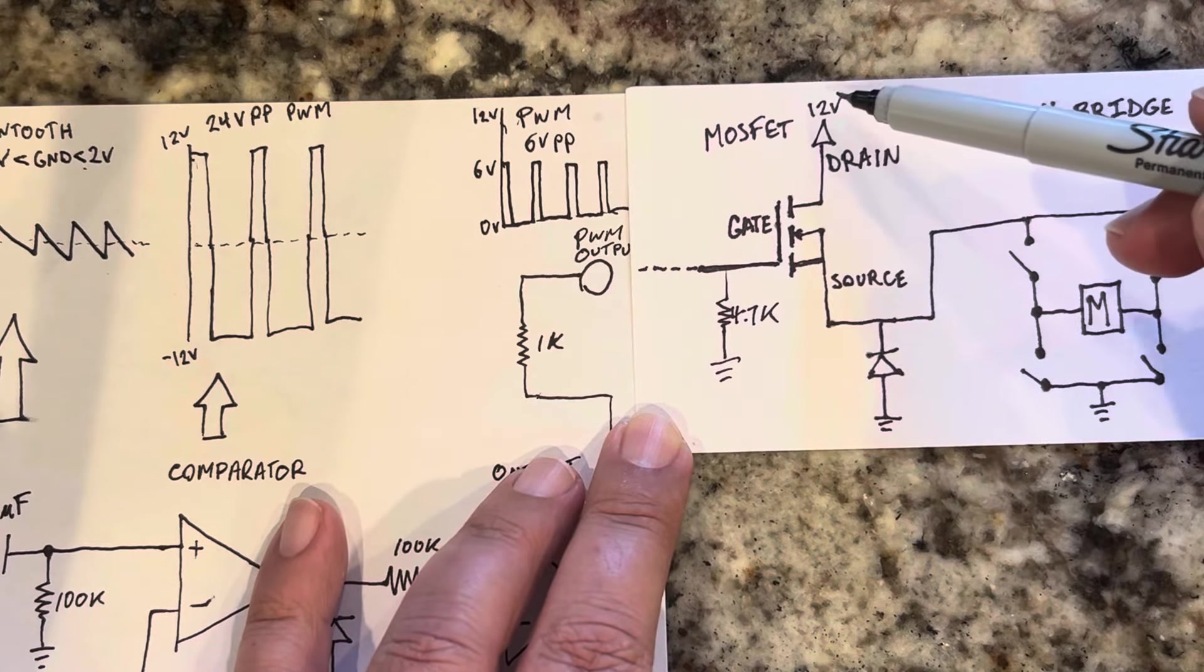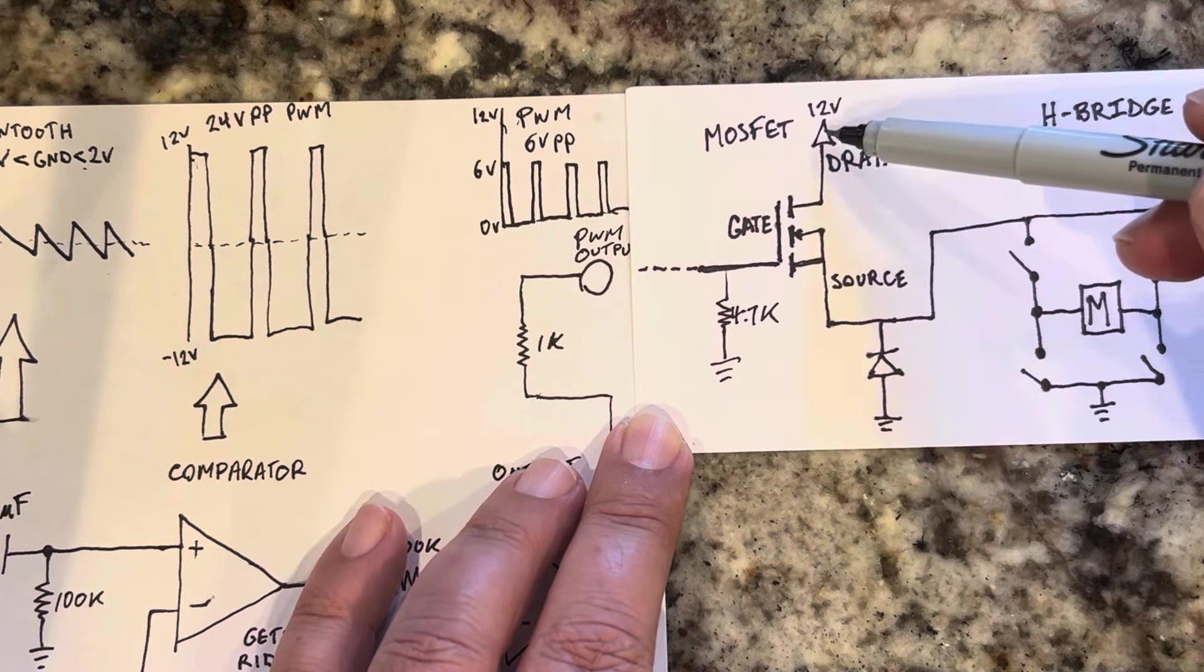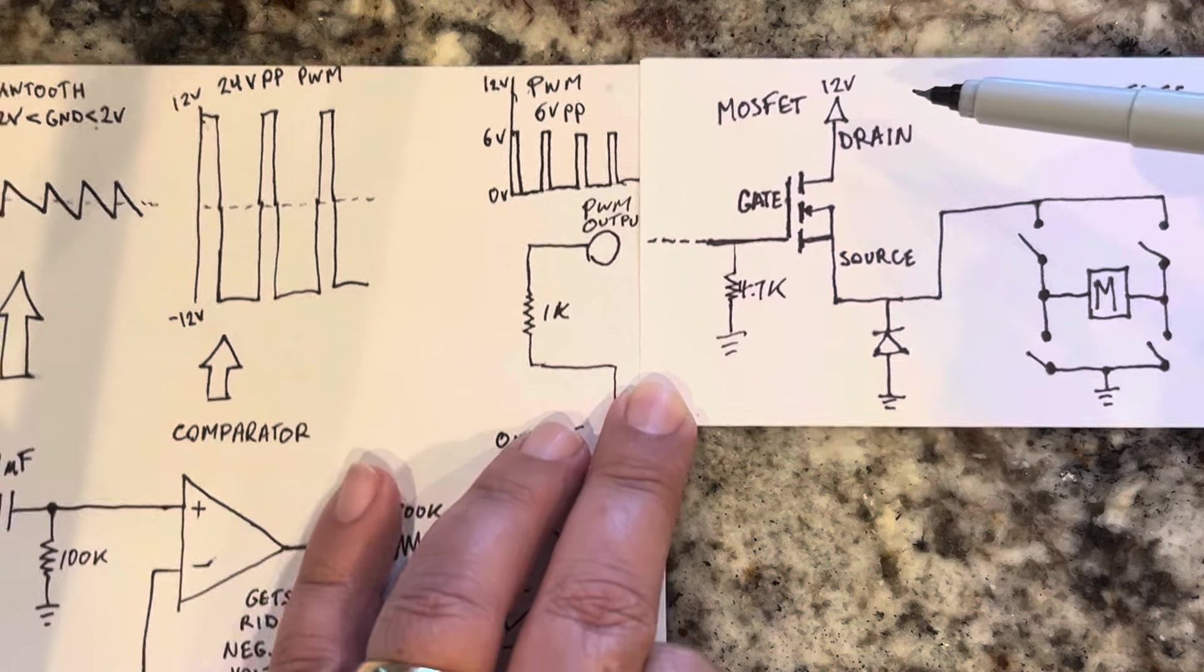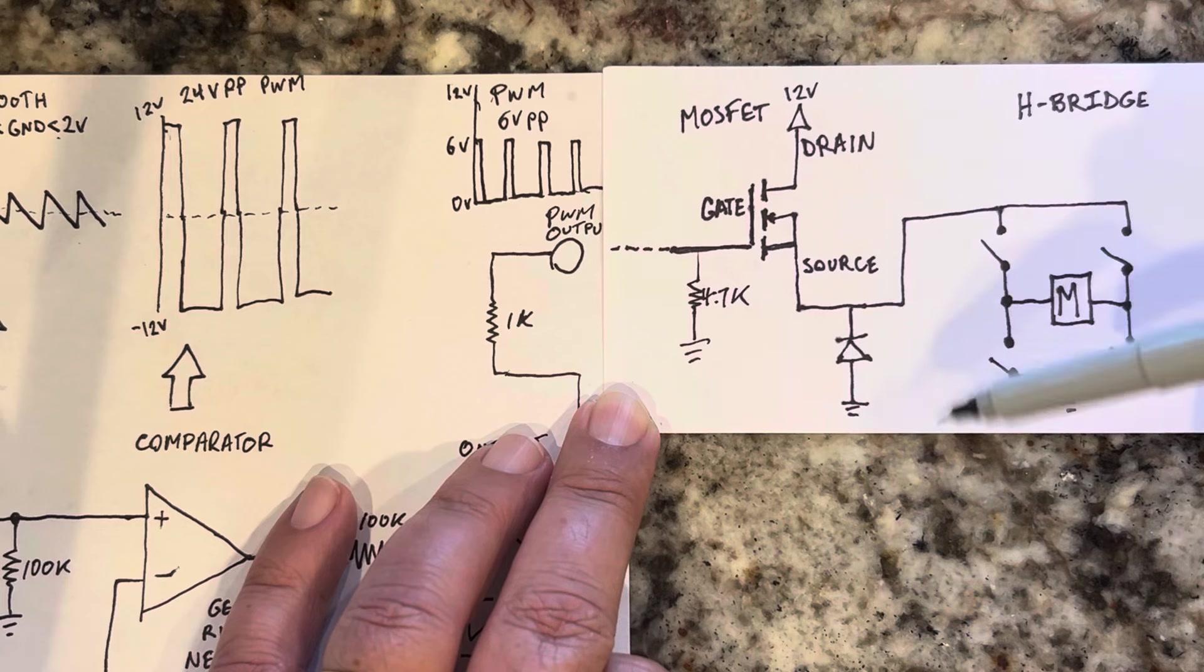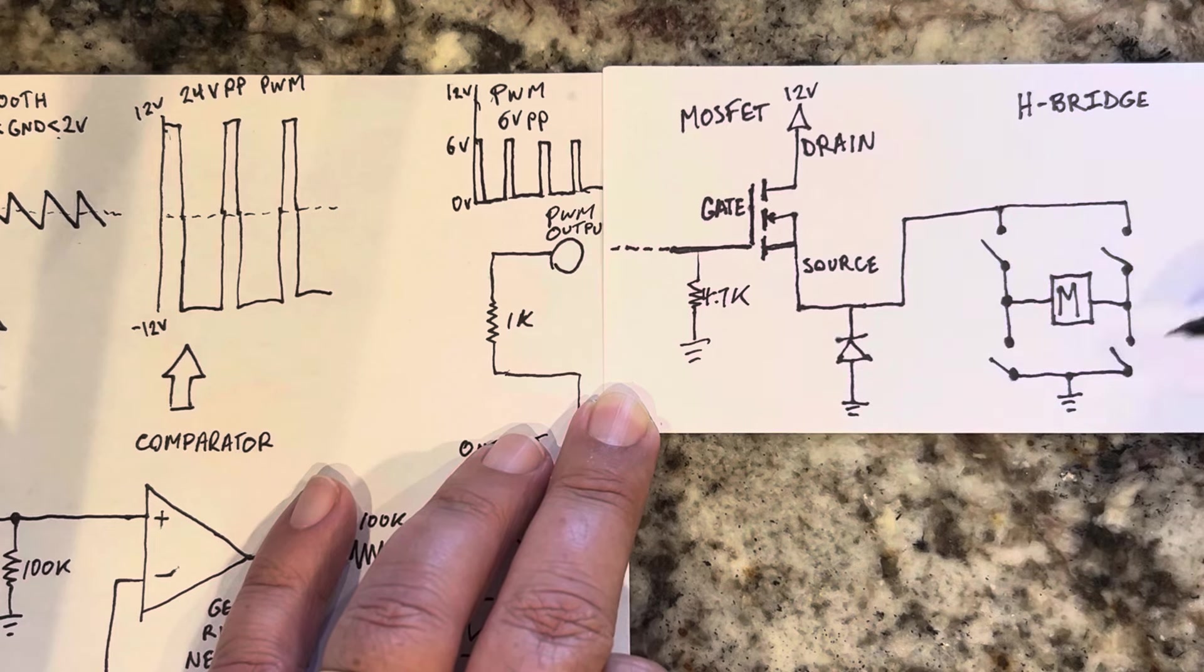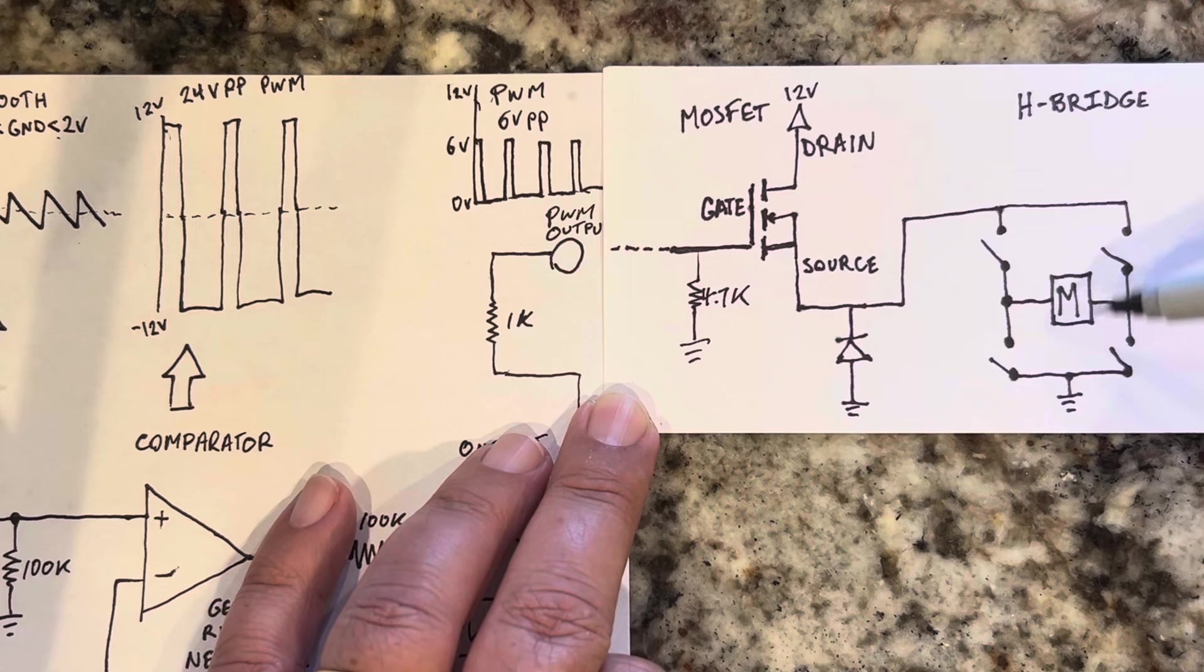The drain of the MOSFET gets attached to 12 volts. The source of the MOSFET is the output. I'm using a diode from ground to positive as a flyback diode to prevent any problems with the induction by the motor.